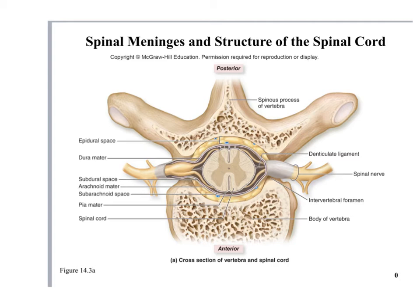The meninges — dura, arachnoid, and pia mater — cover both the brain and the spinal cord. Cerebrospinal fluid is found in the central canal and in the subarachnoid space. An epidural, used in childbirth, places anesthetic in the epidural space to block nerves from that point downward so the patient doesn't feel the intense pain.